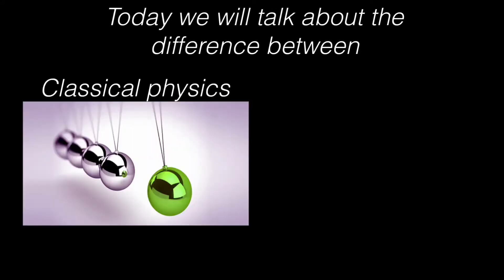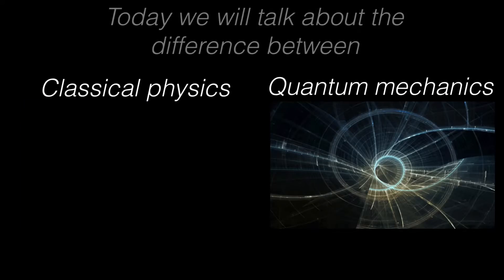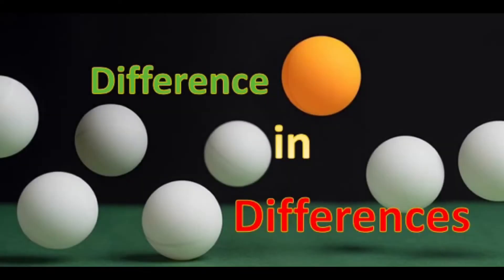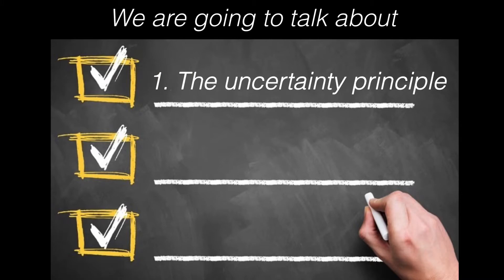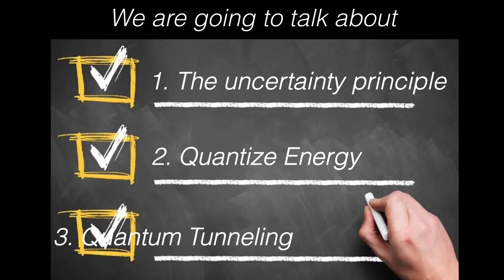Today we'll talk about the difference between classical mechanics and quantum mechanics. Since there are a lot of differences, we're going to talk about three of them. First is the uncertainty principle, second is the quantized energy, and lastly quantum tunneling.